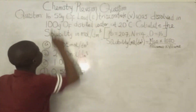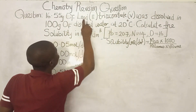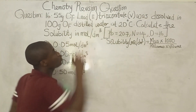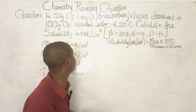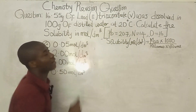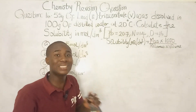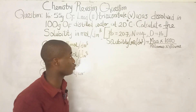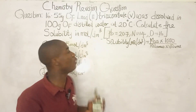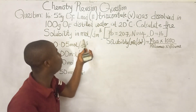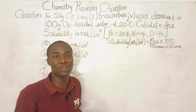The question says: 16.55 grams of lead(II) trioxonitrate(V) was dissolved in 100 grams of distilled water at 20°C. Calculate the solubility of the compound in moles per dm³.